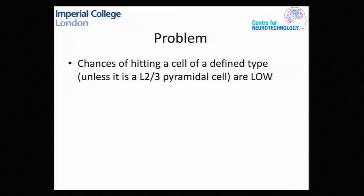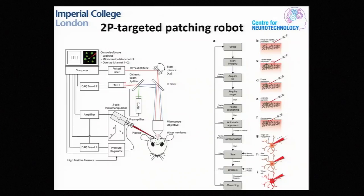The problem with using this for targeted recording is that the chances of hitting a cell of a defined type are quite low, unless it happens to be a layer 2/3 pyramidal cell. So we need to put this two-photon targeting layer over the top. This is our version of the two-photon targeted patching robot. The key problem is that as you move a pipette down through the brain, you're moving the brain. Let's say you've got your labelled cell — you've scanned around in 3D and clicked on it. You move the pipette through the brain, it starts to move the tissue. You get viscoelastic deformation of the tissue, and the target starts to migrate. So you need to compensate for that.